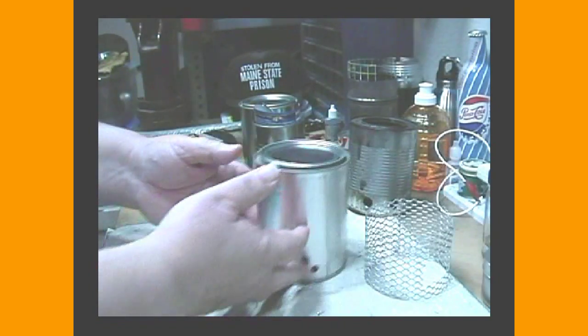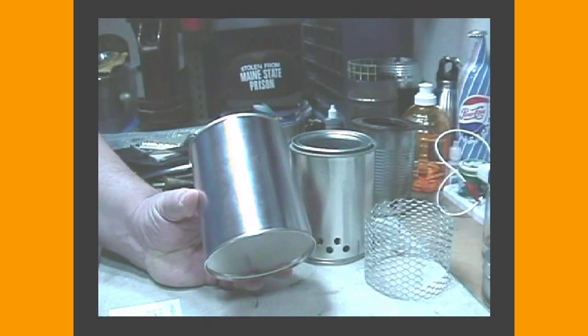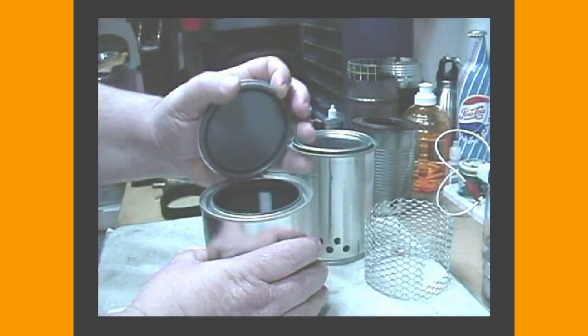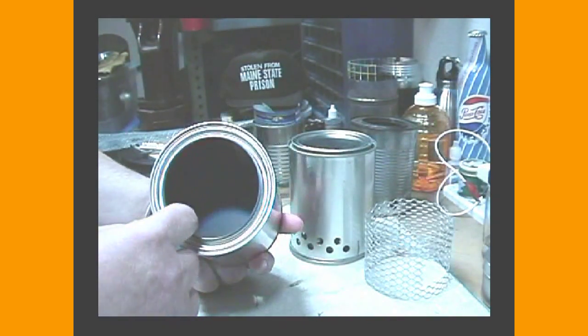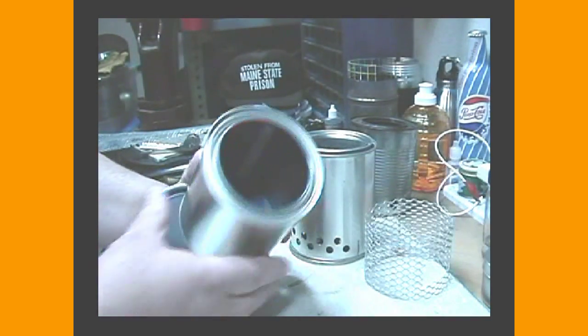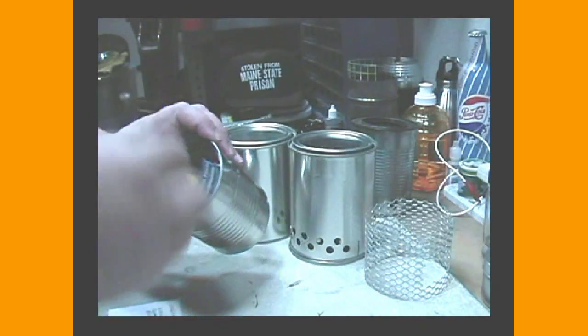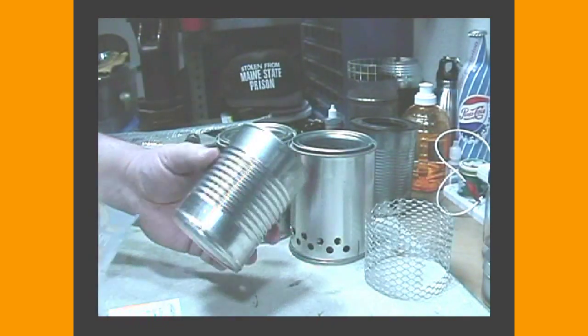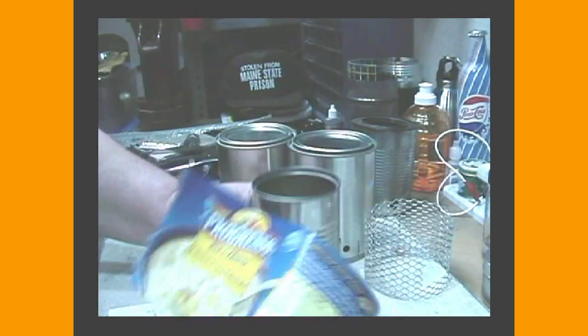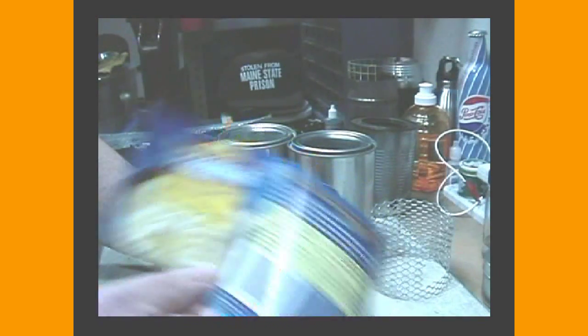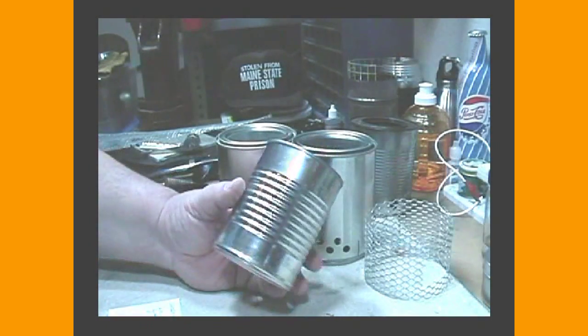So to make this, all you really need is a quart paint can that you can get from your local hardware store. Now unfortunately, most of them have linings on them now, so when you go to use this you're going to have to let this burn out. Need a quart paint can, and what I used was a Progresso can. I prefer the chicken corn chowder, but you could use any one you wanted, it's just that I happen to like corn chowder.